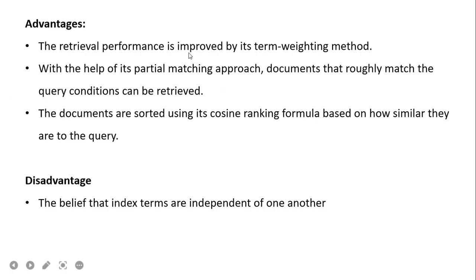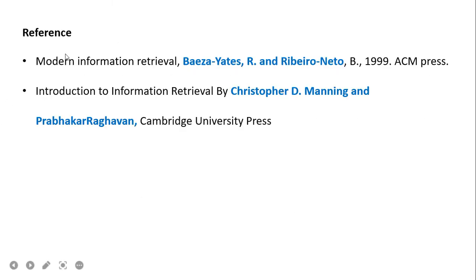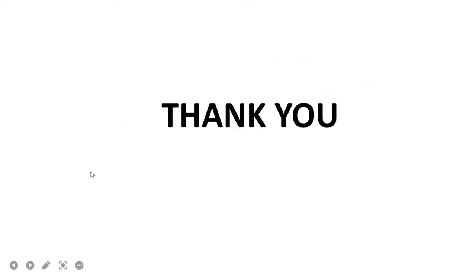Advantages of the vector model: retrieval performance is improved by its term weighting method; with partial matching, documents that roughly match query conditions can be retrieved; documents are sorted using the cosine ranking formula. Disadvantage: the model assumes index terms are independent of one another. Advanced methods can use NLP approaches to model dependencies between index terms. References used are 'Modern Information Retrieval' and 'Introduction to Information Retrieval' by Manning. In the next video more exercises on the vector model will be covered.